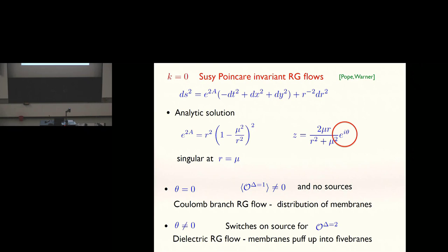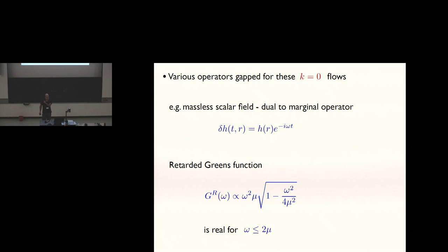And one more thing. Various operators for these flows are gapped. That's very easy to see. If we calculate the spectral density, for example for a marginal operator, we should take a massive scalar field in the bulk. We should solve its linearized equation, impose ingoing boundary conditions at infinity, take the ratio of the source to the VEV at infinity, and we get the retarded Green's function. You can do that analytically, and this is the answer. The thing just to notice about that answer is that it's real for omega less than 2 mu. So there's no spectral weight when omega is less than 2 mu. That's a hard gap.